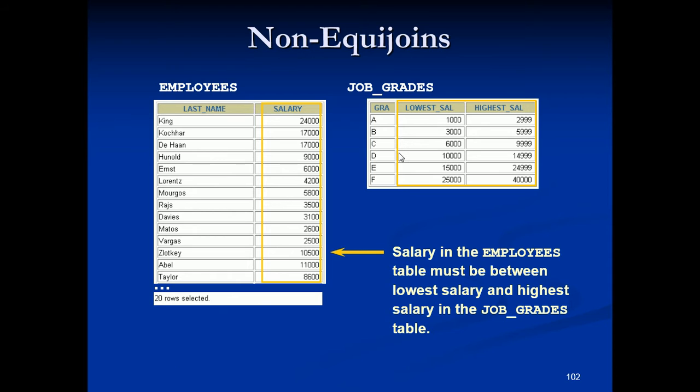This relationship between these two tables can go ahead with a non-equijoint. A relationship between the two tables is that the salary column in the employees table must be between the values in the lowest salary and the highest salary columns of the job grades table. So the relationship is obtained using an operator other than equals to.